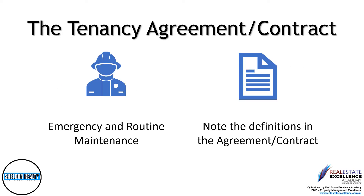The standard terms of the Tenancy Agreement Contract Form 18A set out the legal definition of what is emergency maintenance and what is routine maintenance. Please note the definitions in the agreement. As stated, everything is legally required to be in writing under this tenancy contract. However, if you have an emergency repair situation as per the definition, please phone our agency and refer to the agreement for emergency after-hours contact details and procedures, and confirm in writing at a later date.